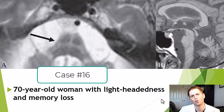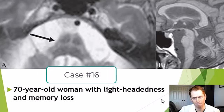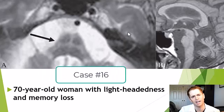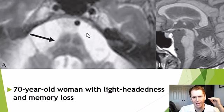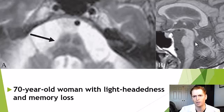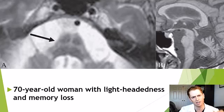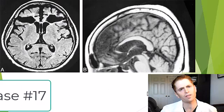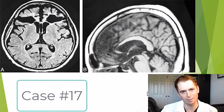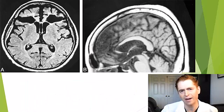A 70-year-old woman with lightheadedness and memory loss. On the left, a zoomed-in axial MRI slice focused on the pons; on the right, a zoomed-in sagittal MRI. The more distinctive finding is shown by the arrow on the left. And now the case that stumps neurology residents every single time: an 80-year-old man with a history of psychiatric illness.